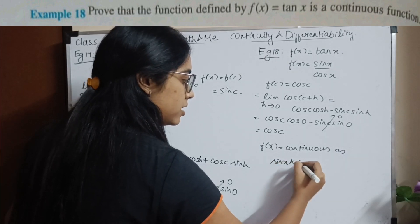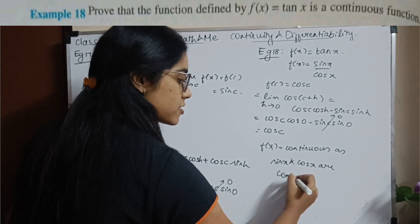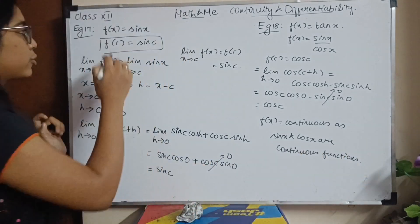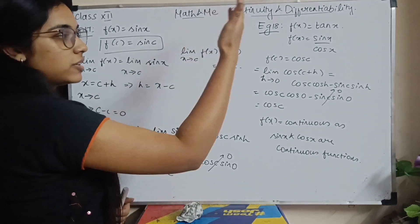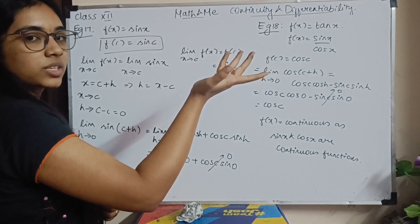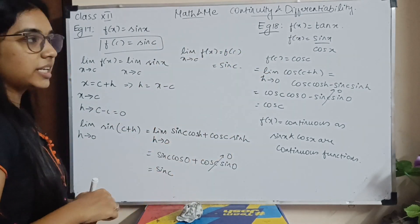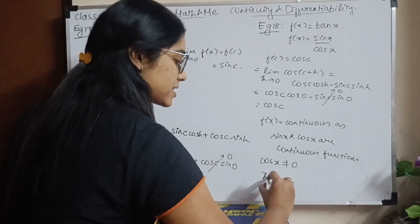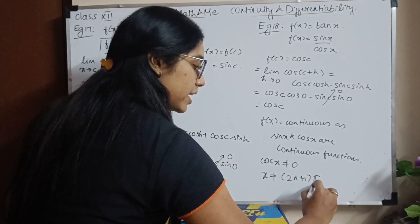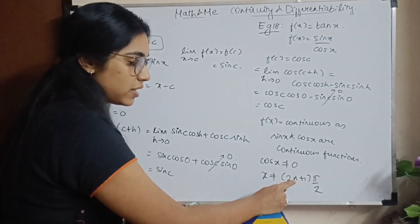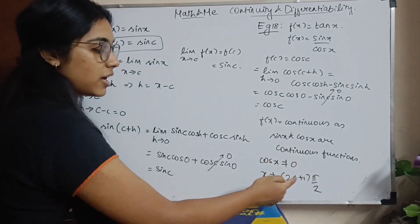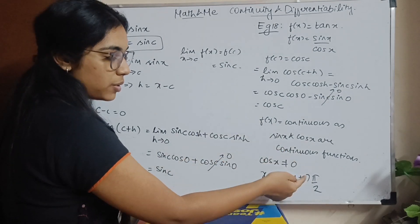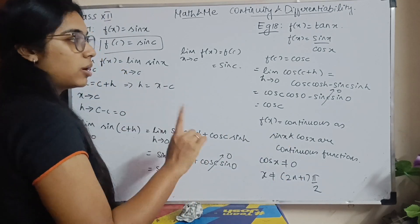Since sine and cosine are continuous functions — as proved in the previous examples — and by Theorem 1, the division of two continuous functions is also continuous. However, the denominator cos X should not be equal to 0. So the condition is: X should not equal (2n + 1)π/2, because substituting those values makes cos X = 0.